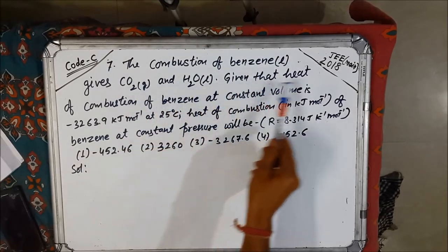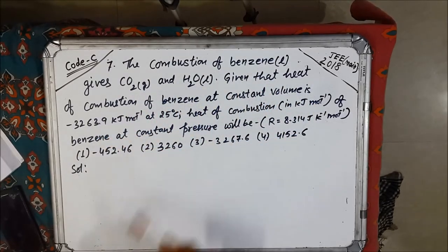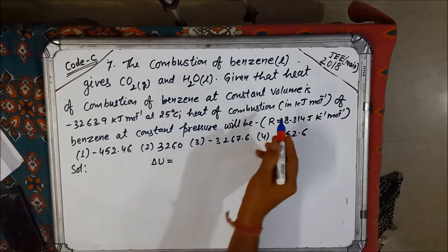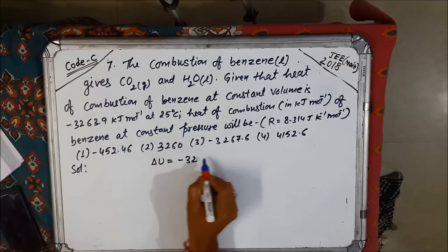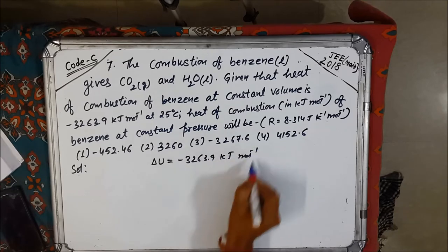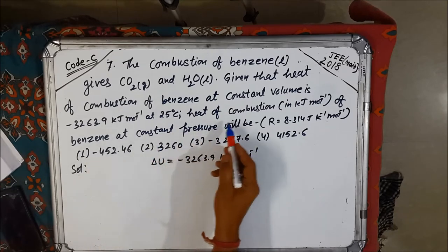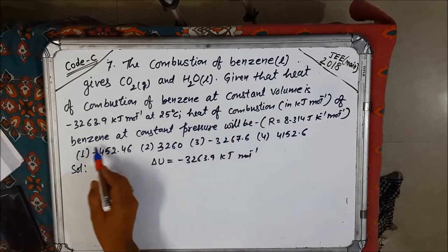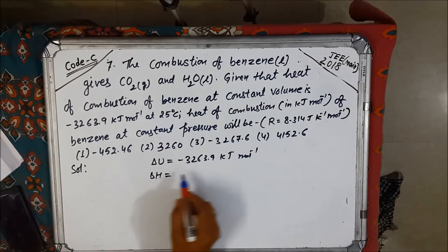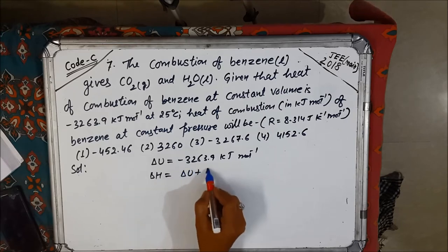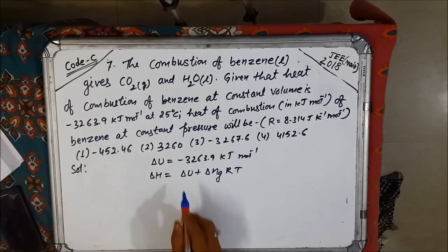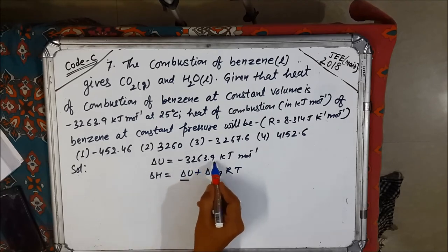Next problem: combustion of benzene gives CO₂ and H₂O. The heat of combustion at constant volume, ΔU, is given as −3263.9 kJ/mol. We need to calculate the heat of combustion at constant pressure, ΔH. The relation is ΔH = ΔU + ΔngRT.